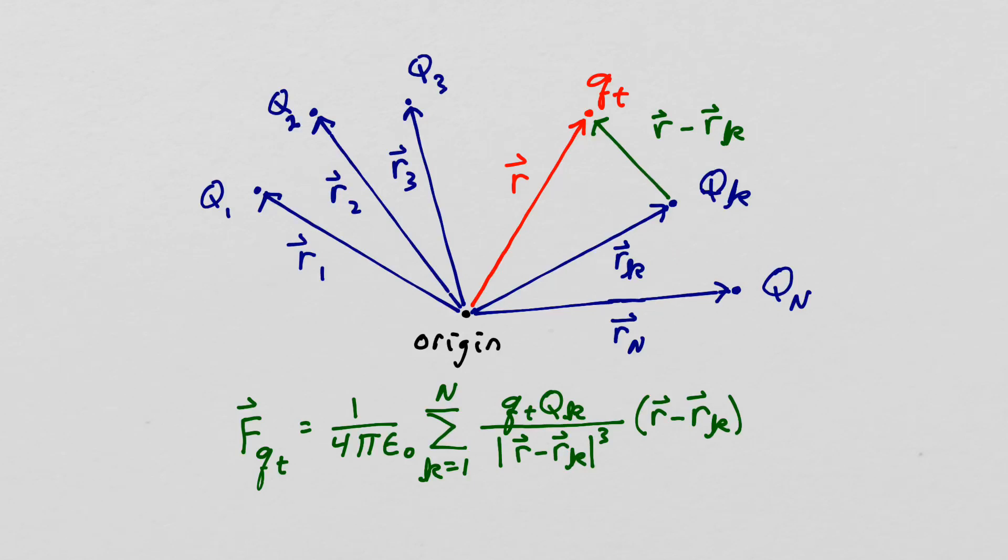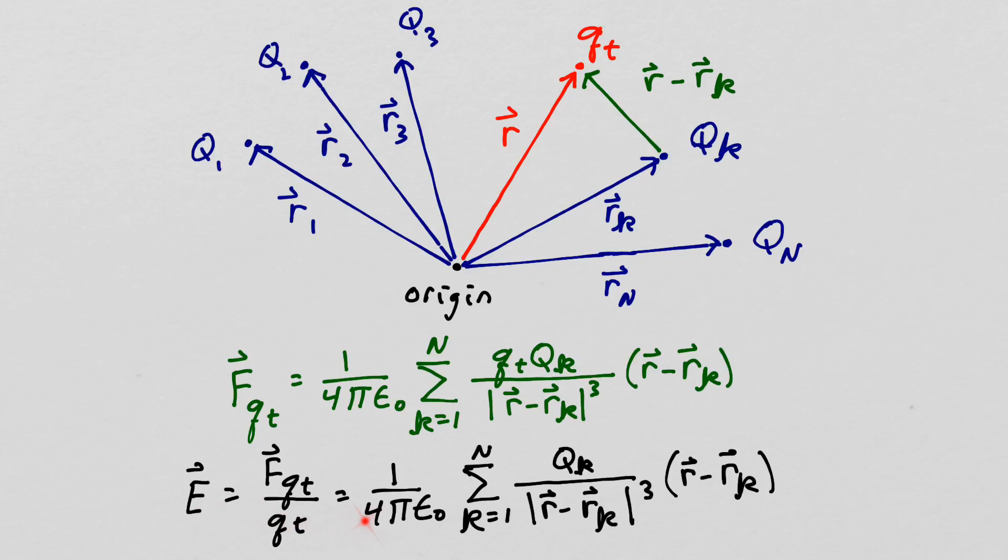We will now divide both sides of this equation by our test charge q sub t and we have our expression for the electric field intensity at some point r due to n point charges.